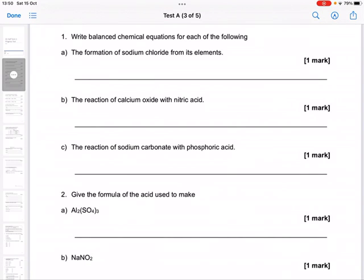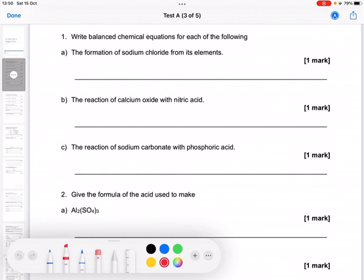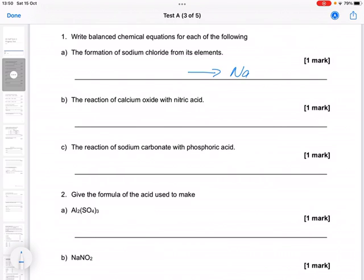Right, balance chemical equations for each of the following. So the formation of sodium chloride from its elements. Let's start with sodium chloride. So that is what we're making - we're making that from sodium metal and chlorine which goes around in pairs, which means I need two of those and two of those.